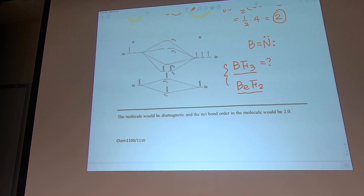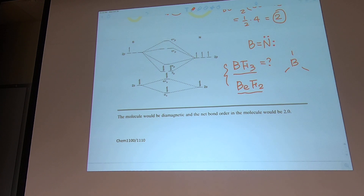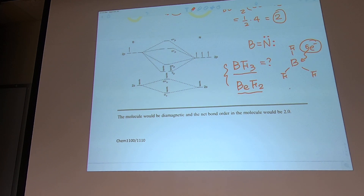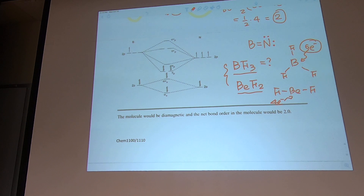The atoms that reliably obey the octet rule are carbon, nitrogen, and oxygen — no exceptions there. But boron in its Lewis structure looks like it only has 6 electrons, and beryllium has only 4 electrons, yet these are stable compounds. So the chemistry of boron and beryllium is different — it's more complicated, closer to what's done in organic chemistry.